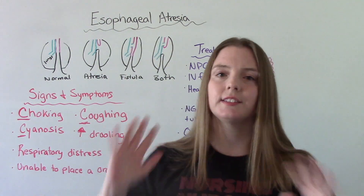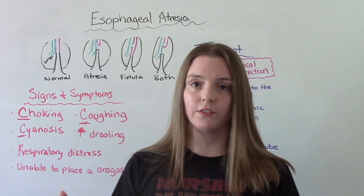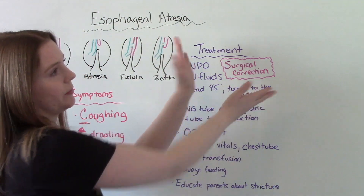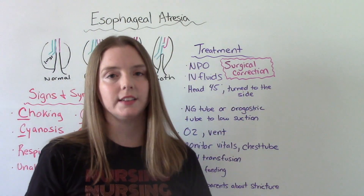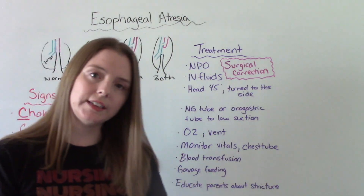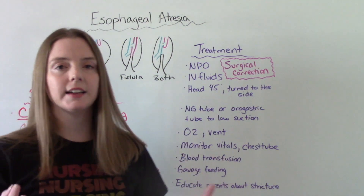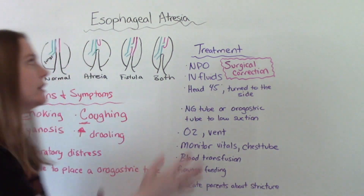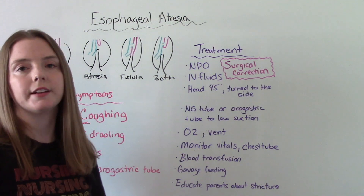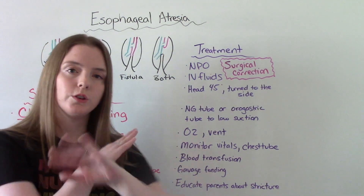This is very serious and life-threatening — it needs to be fixed immediately after birth. The way we fix this is surgery; these babies are going to need surgery. Importantly, they are going to be NPO — we should not attempt to feed these babies if we suspect esophageal atresia or tracheoesophageal fistula, as that is dangerous. No feedings.